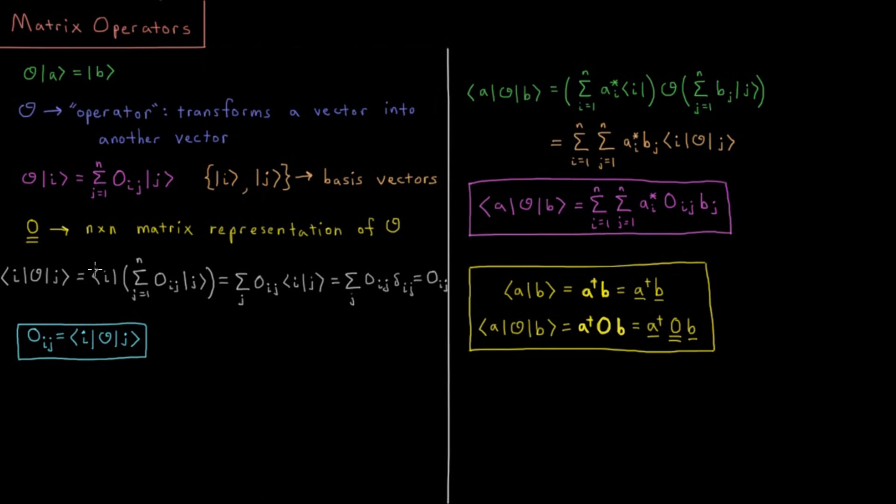We have bra basis vector i, then we have the sum from j equals 1 to n, Oij acting on j, because this is what we were looking at before. Now we have the operator acting on the ket vector, the individual results being this type of label.